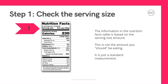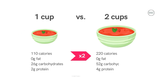So in this example, two-thirds cup of this food has 230 calories, eight grams of fat, 37 grams of carbohydrates, three grams of protein, and so on. Keep in mind, the serving size listed might be less or more than what you will eat. So if you're going to eat double the serving size, you'll have to double all the values in the table.